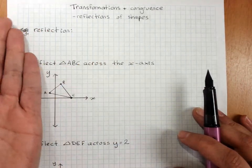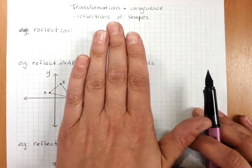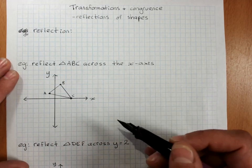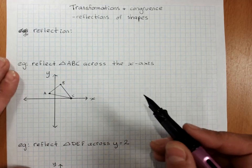A reflection is flipping a shape, either vertically or horizontally. It stays the same shape, it's still congruent, but it will look different.